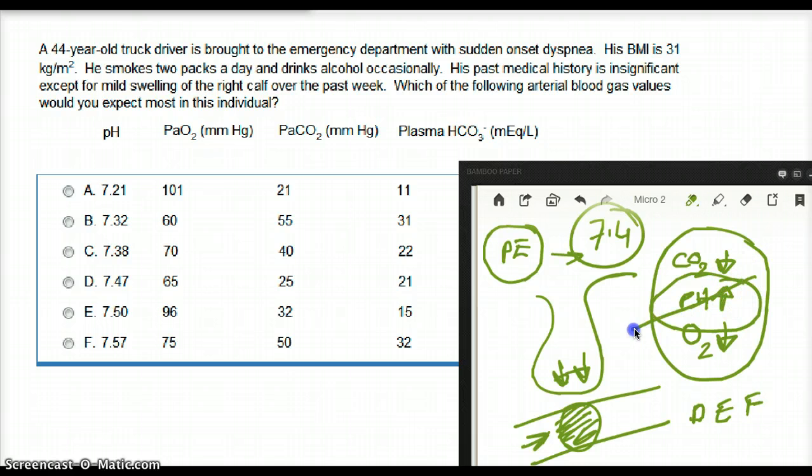Now, I'm left with D, E, and F. Now, this one is taken care of. Now, let's look at oxygen. And we know that oxygen is going to drop. So, let's look at the three values. We have 65, 96, and 75. 96 is almost perfect. That cannot be the option. So, we're going to rule out E.